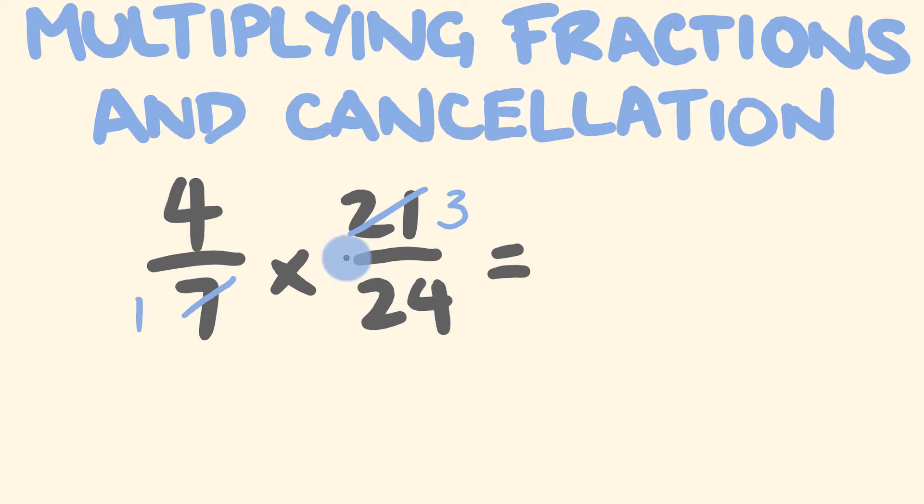Comparing 4 to 24 they have a common factor which is 4. 4 goes into 4 once and 24 divided by 4 is equal to 6. Alright now we can directly multiply across. 1 times 3 is equal to 3. 1 times 6 is equal to 6.